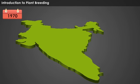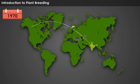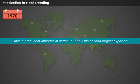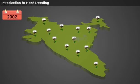From the middle of the 1970s, the government began to launch special schemes such as intensive cotton production programs, which paved the way for the gradual increase in yield. India can proudly state that, once a prominent importer of cotton, it is now the second largest exporter of cotton.